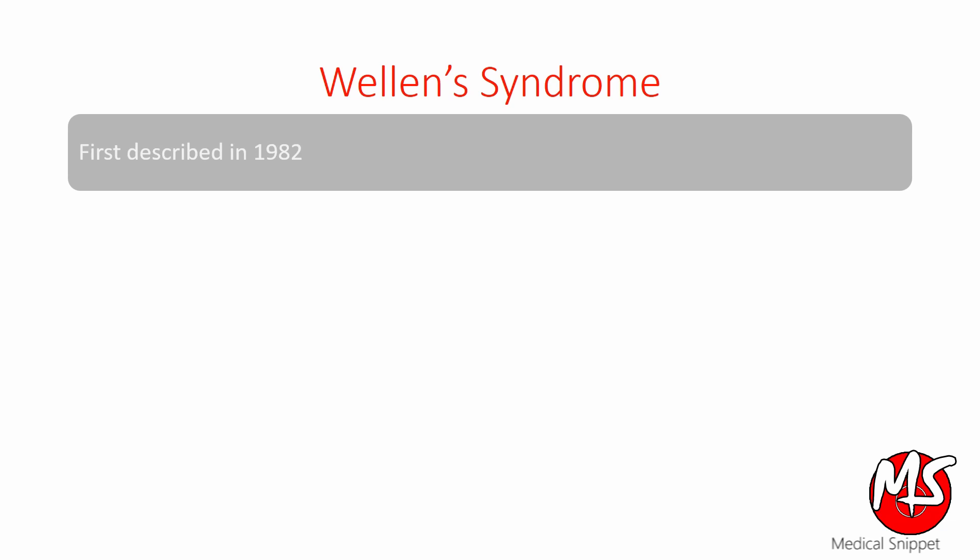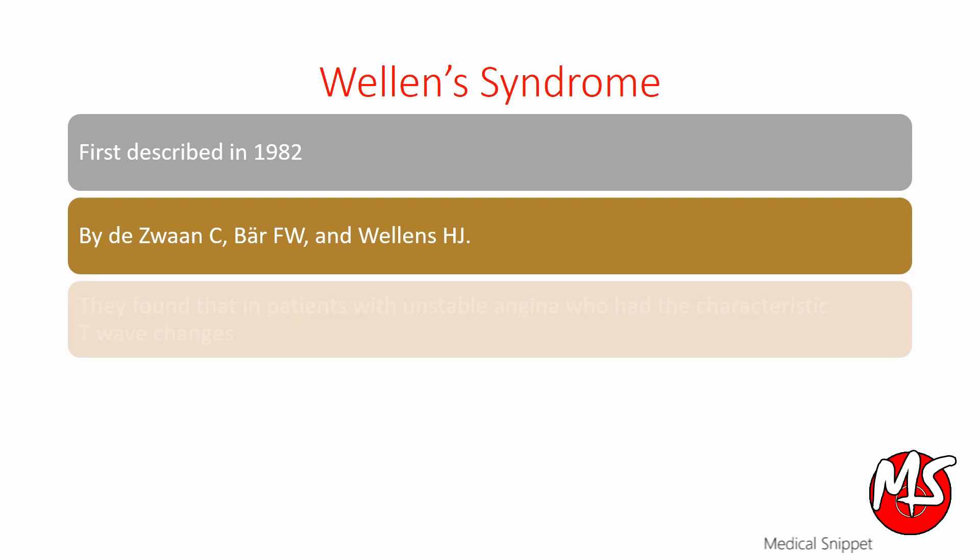Wellens syndrome. It was first described in 1982 by Desmet, Barr and Wellens.